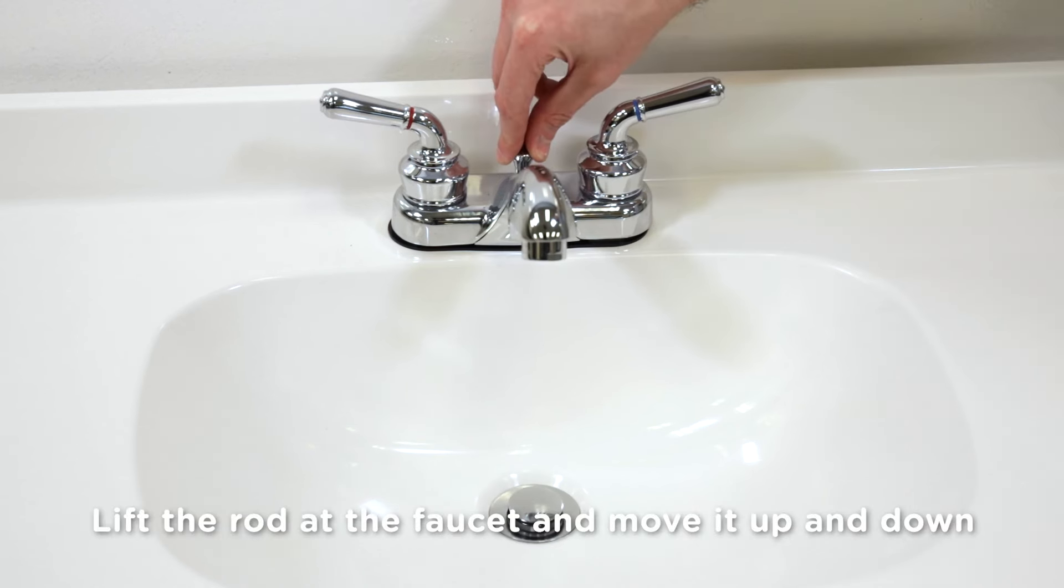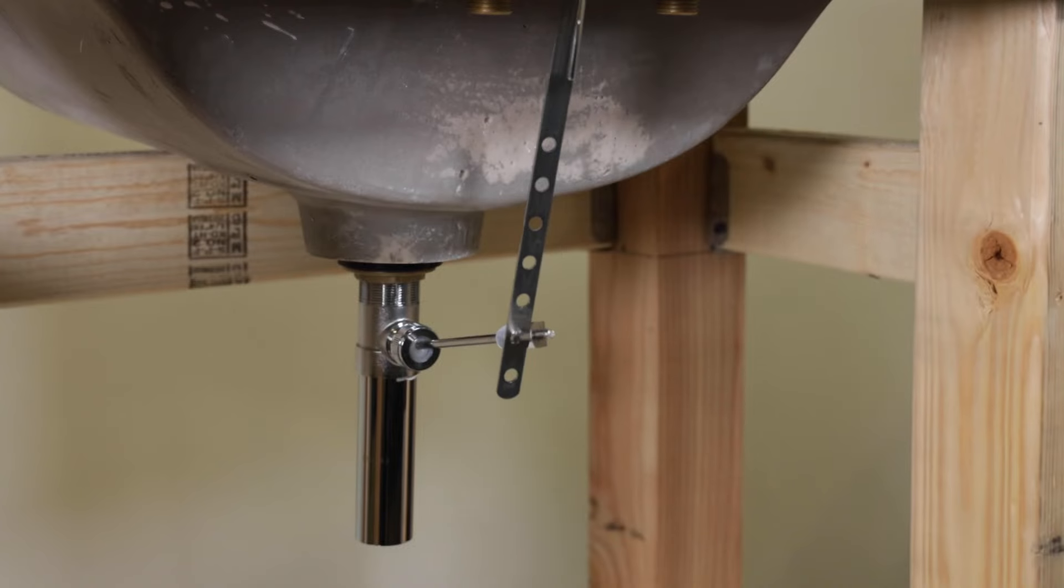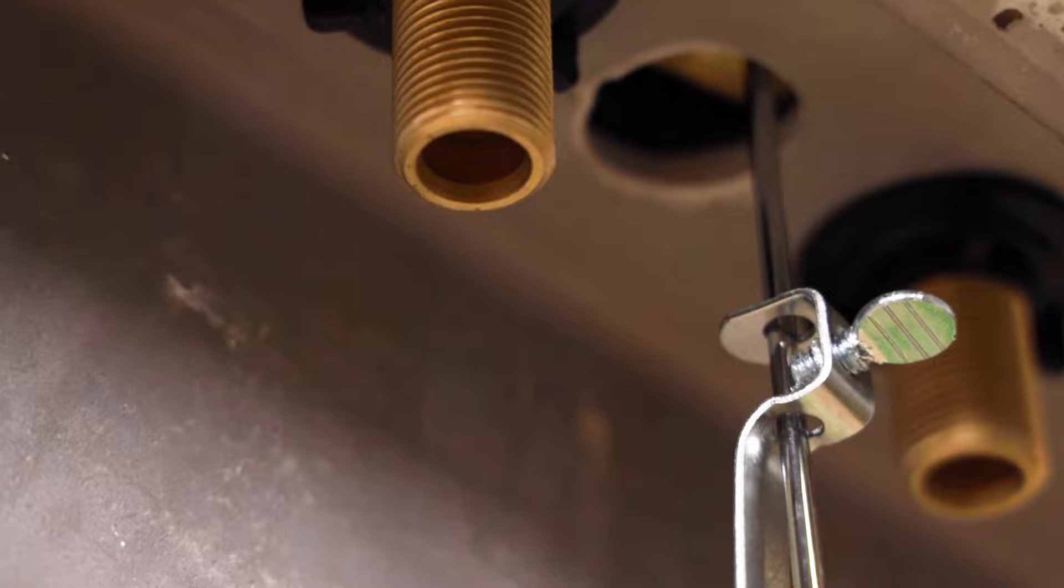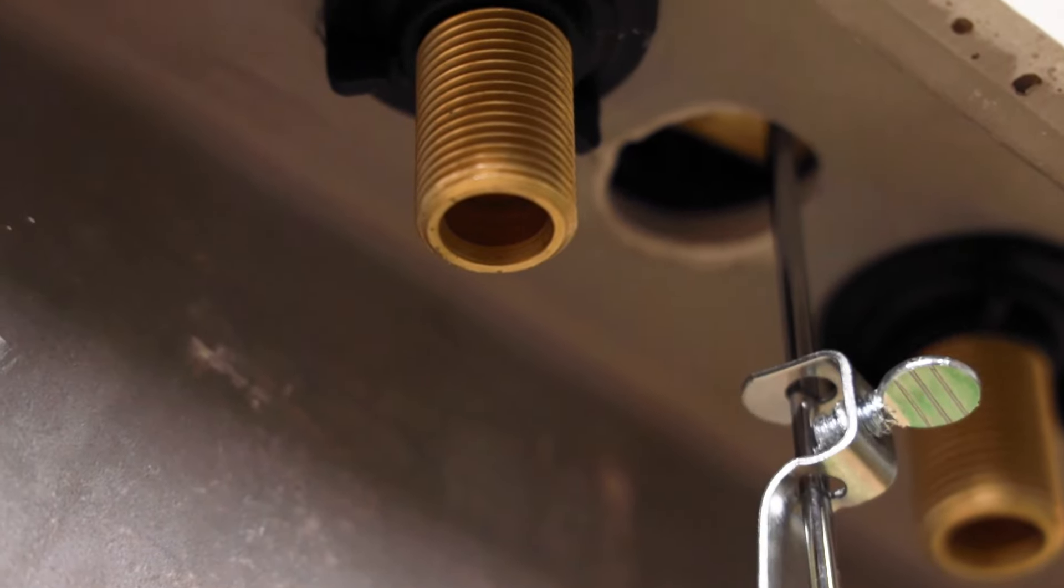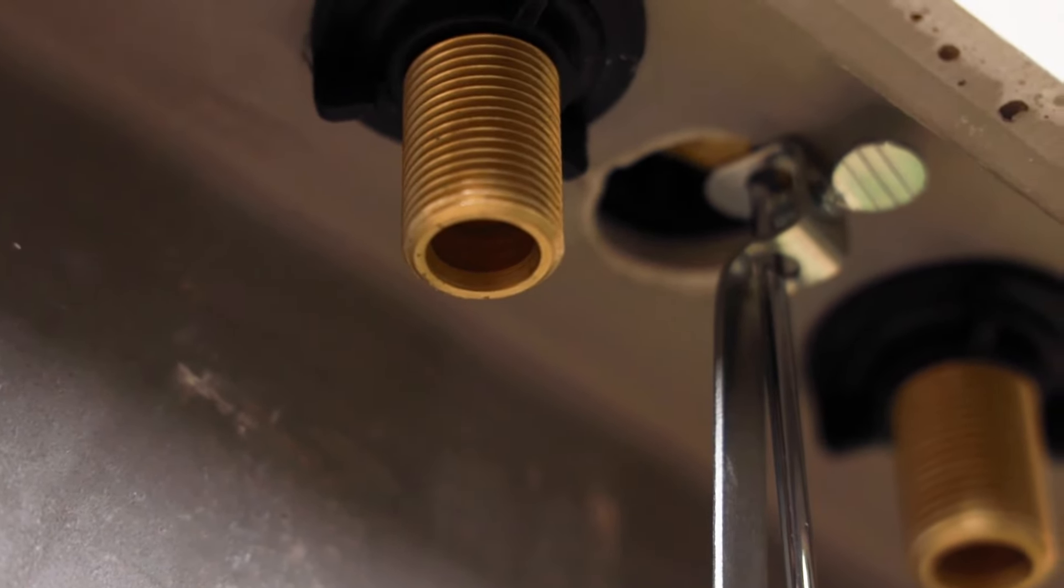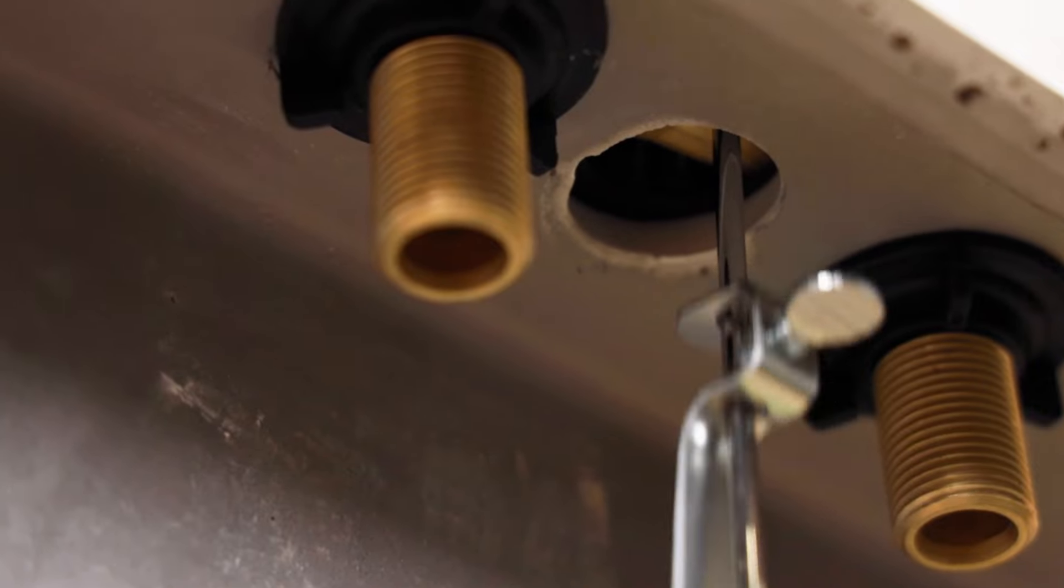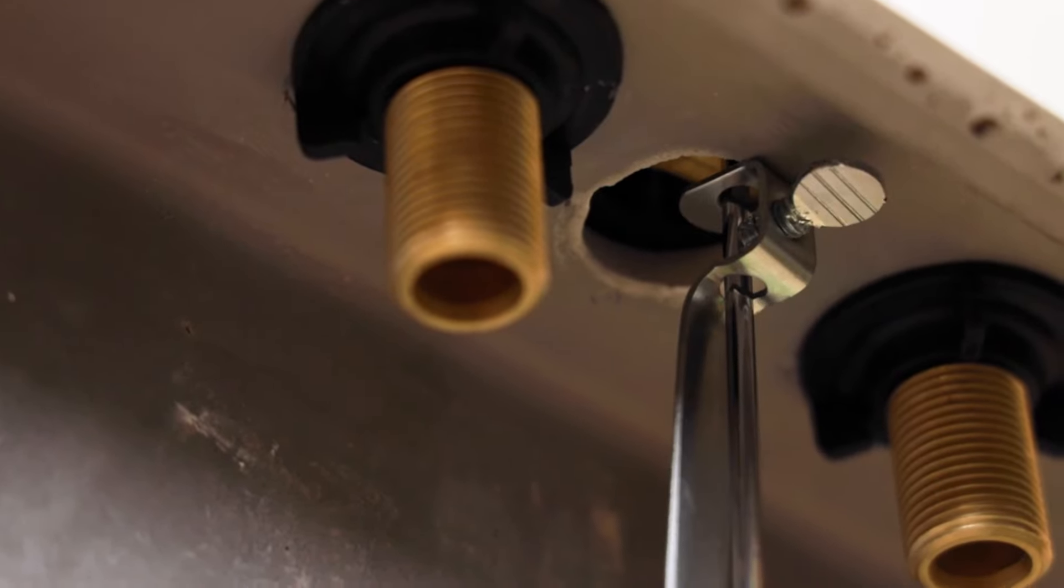Now test out your creation. Lift the rod at the faucet and move it up and down. It should move freely and make the stopper go up and down smoothly. If it hits something or stops without full range, check to see what the linkage is hitting and make the adjustments underneath. There's a wide range of adjustments that can be made between the pop-up rod and the linkage.